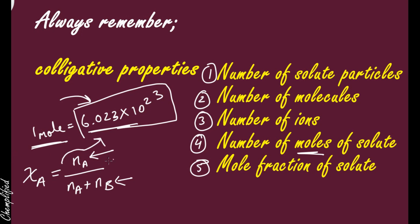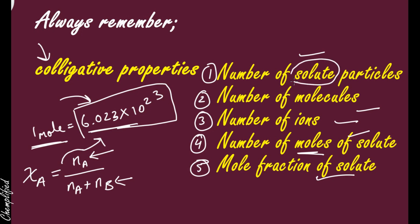So in mole fraction also, we are using number of moles, which means we are talking about a particular number of particles. In any way — number of moles of solute, number of molecules, number of ions, or mole fraction — all are used to measure or represent colligative properties. And always remember: whenever you are talking about colligative properties, always talk about the solute, not the solvent.